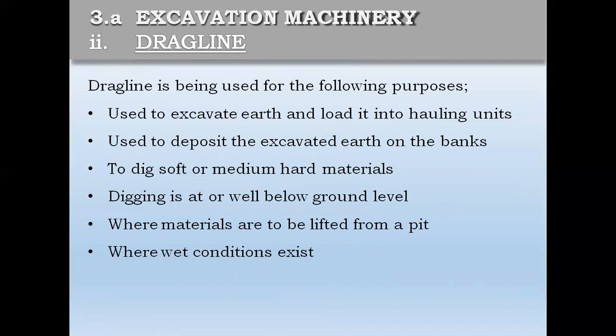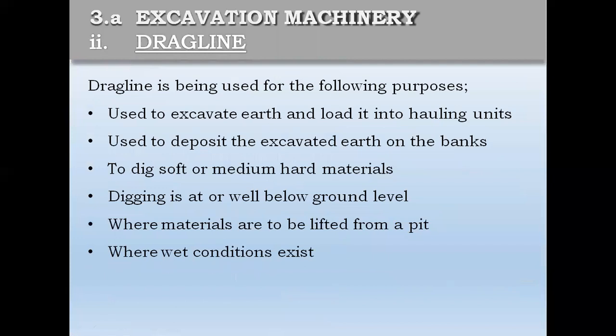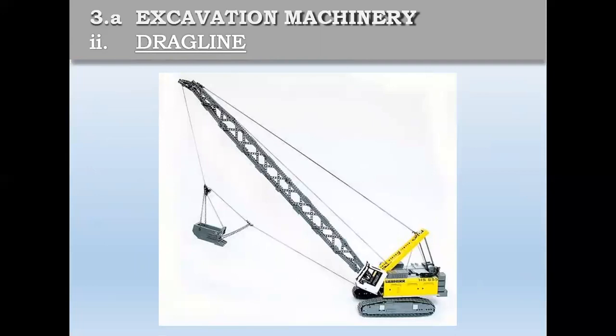The next excavation machinery is the dragline. The dragline is used for medium and soft material excavations. It excavates material and loads it into holding units, and deposits the excavated material on the banks. It is used to dig soft or medium hard materials, and for digging at or below ground level where materials are to be lifted from a pit. The dragline uses a cable mechanism and is suited for loose or medium soft materials near a bank or river.